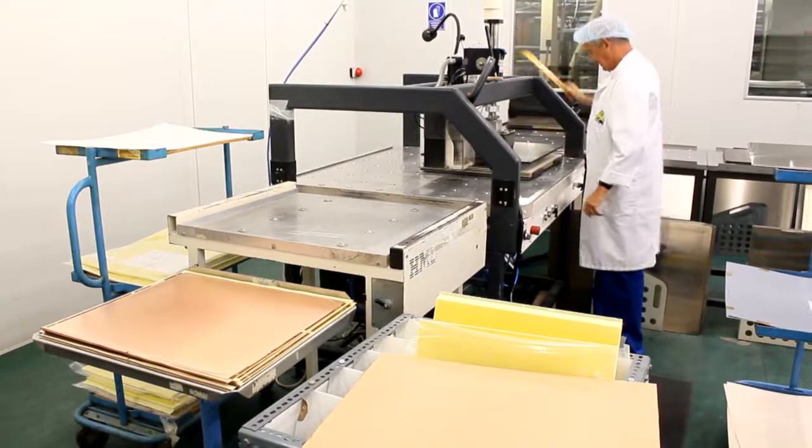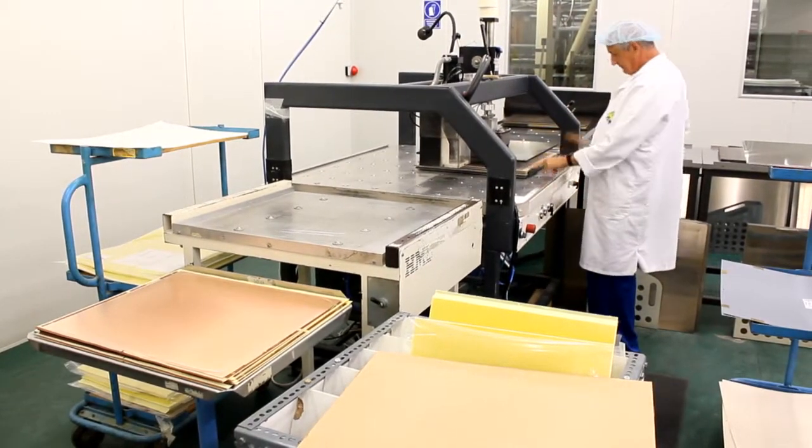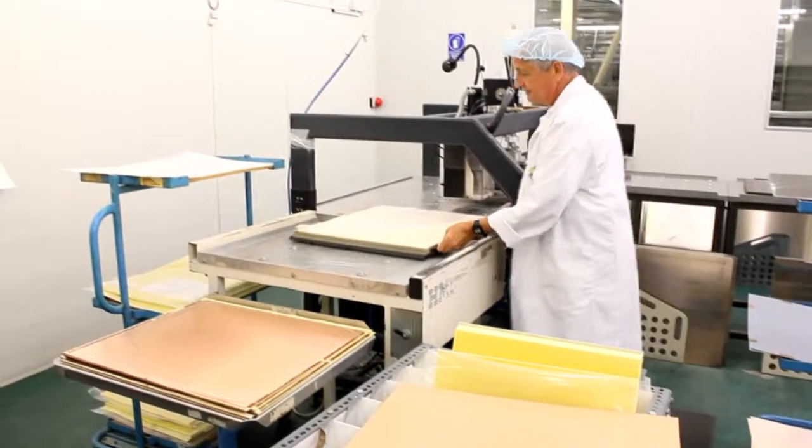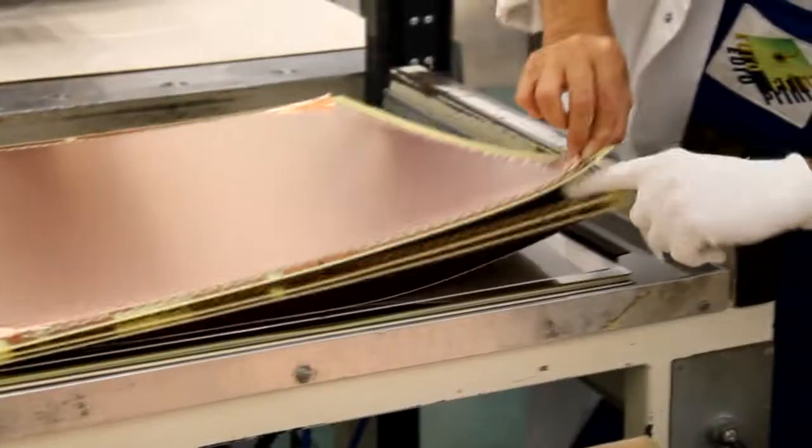He unloads each of the panels from the stack, removing the aluminum press plates used to ensure a smooth copper finish. The copper foil is now bonded in place to form the outer layers of the PCB.